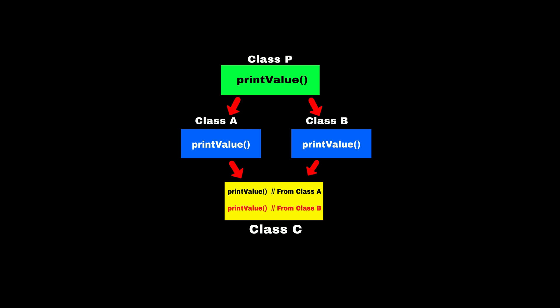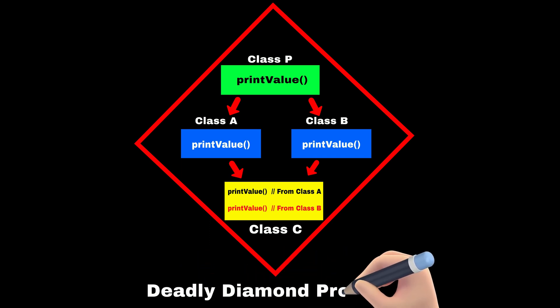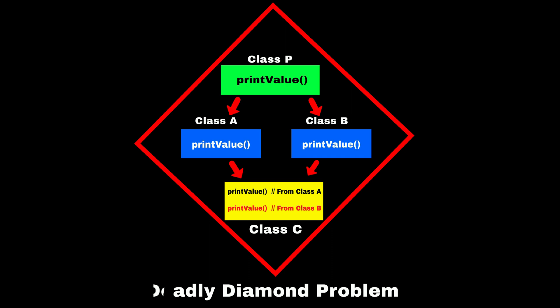You can observe that the structure of this inheritance looks like a diamond, and that's why this problem is called the deadly diamond problem. That's the major reason why multiple inheritance is not allowed in Java using classes.